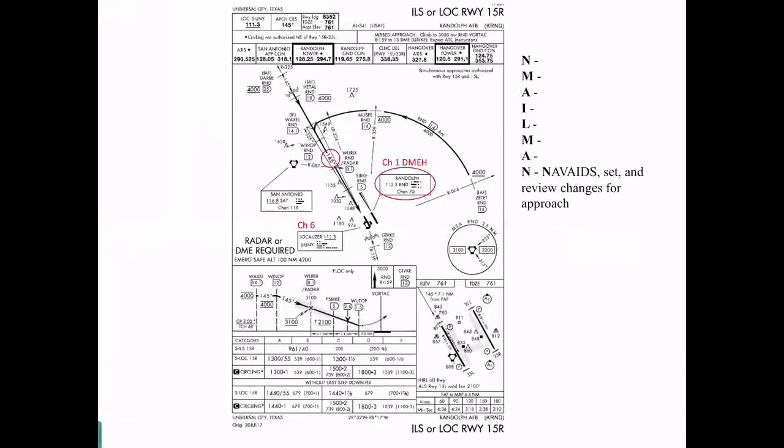Last N, then, are the nav aids for my approach. In this case, I want to have channel 1, DME hold, channel 6 for the localizer, and make sure I have my inbound course of 1-4-5 set up in my course select window before I get on to final. So there, there is the N-MAILMAN check. That is just one example of how to run it and the things to review. As you can see, it jumps around from item to item. It's not very chronological, and it can be, like I said, very lengthy if you don't practice it. But in a nutshell, there is your N-MAILMAN check.